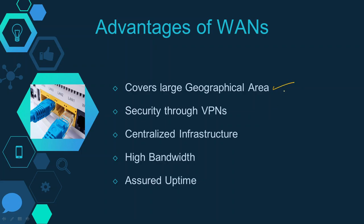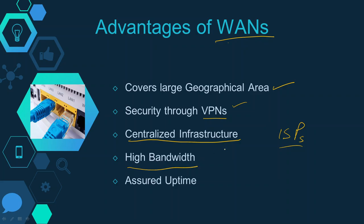Some advantages of the WAN: first, it covers a huge area — for example, when you watch a video on YouTube, the video is served from a YouTube data center in another country while you watch it from home, so the internet is also an example of WAN. It is secured via VPN or Virtual Private Networks. It also has centralized management and centralized infrastructure through ISPs and different organizations.